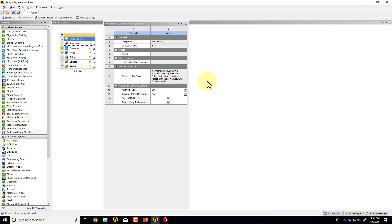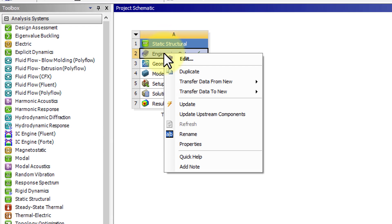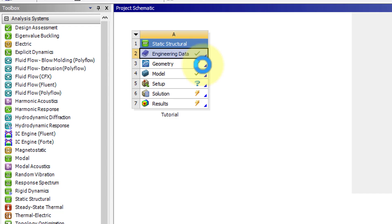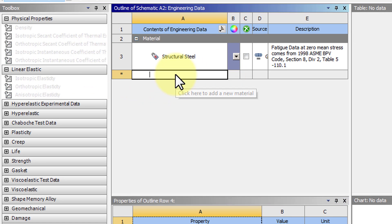I need to go to the project page, and let me move this to the right. And I'll right-click on Engineering Data, and I'll say Edit. And I'll create a new material. I'll click over here.